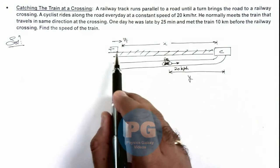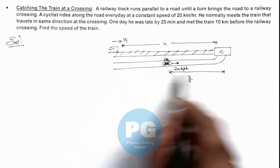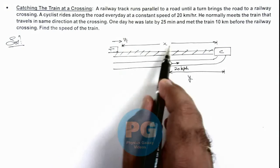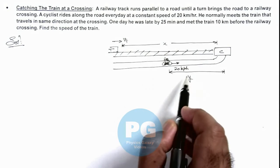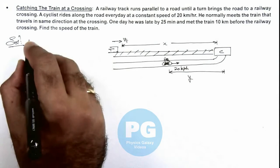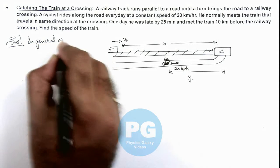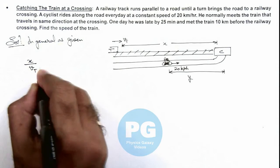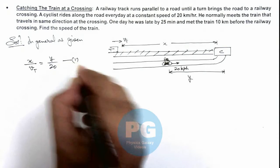It is given that the train, which is traveling in the same direction as the cyclist, meets the cyclist at the crossing. That means the distance x traveled by the train is in the same direction in which the cyclist travels distance y. So we can write, in general: distance x divided by velocity of train is equal to y divided by 20. Say this is our first equation.